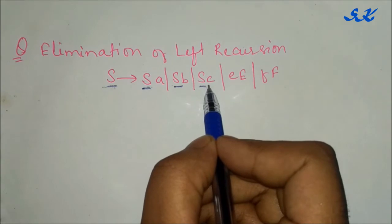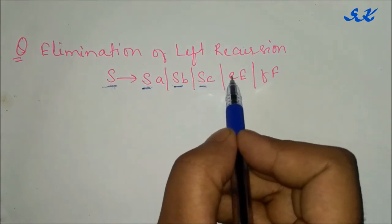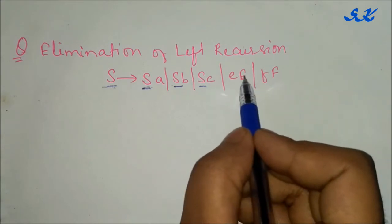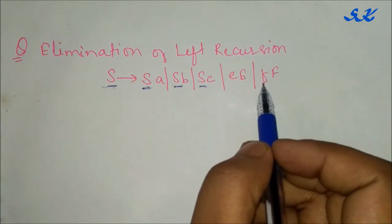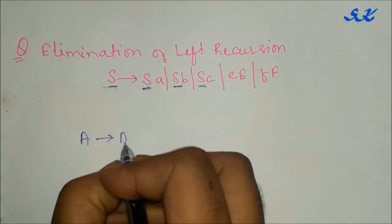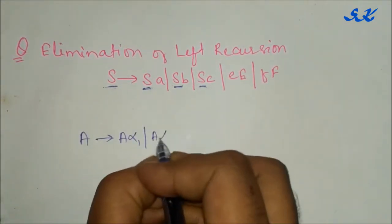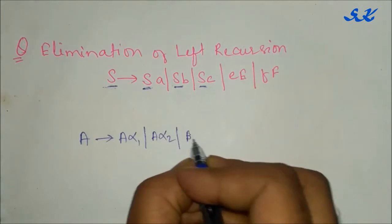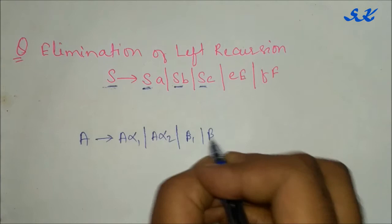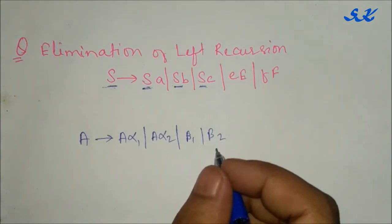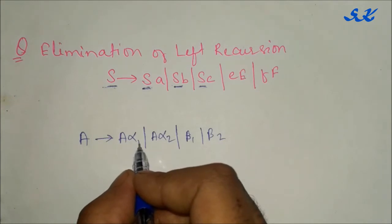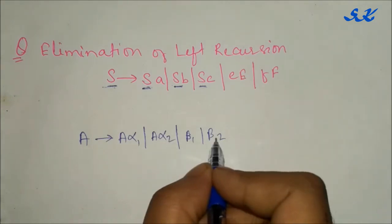E, F are terminals and capital E, F are non-terminals. To solve this question, that says A goes to A alpha 1, A alpha 2, beta 1, beta 2. There is a non-terminal alpha 1, alpha 2, beta 1, beta 2 is a string of grammar symbols.